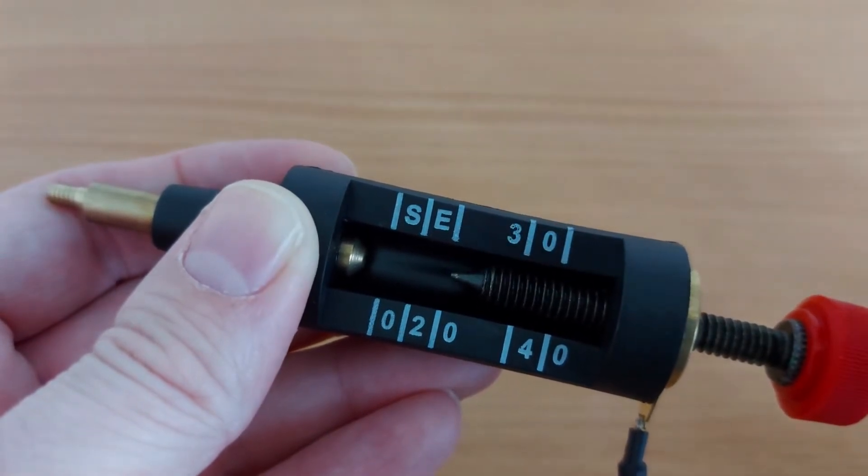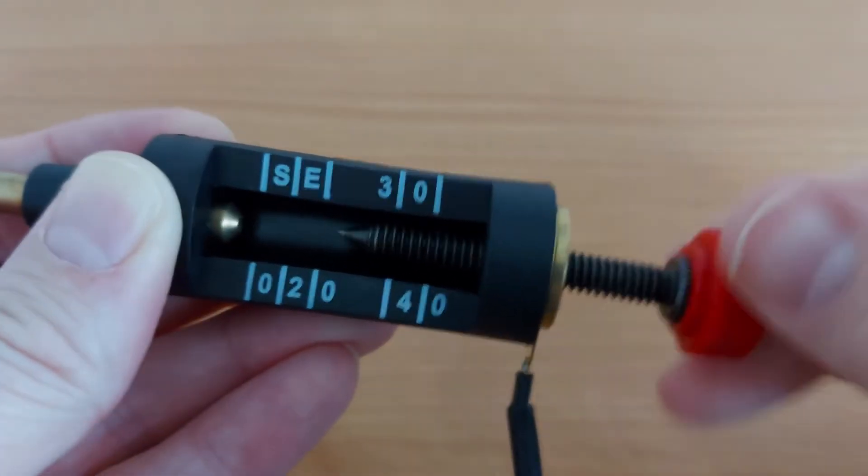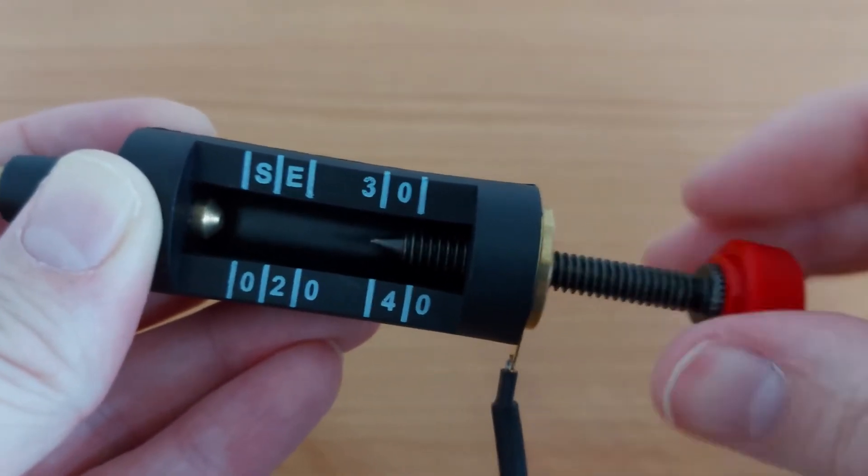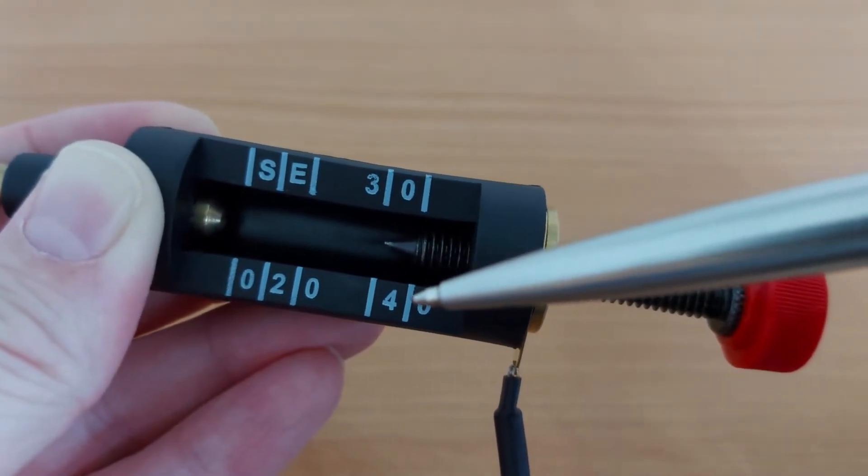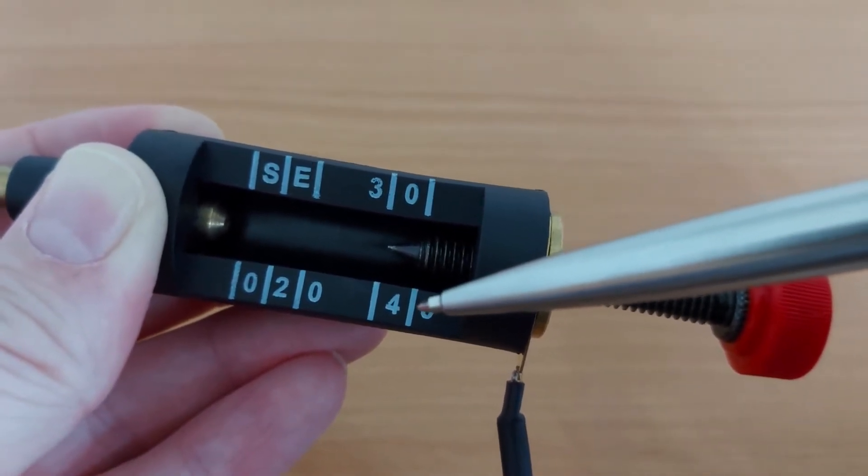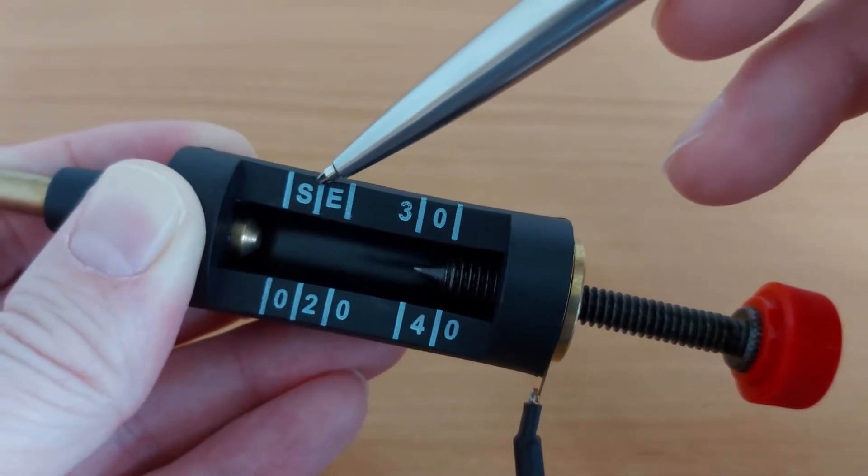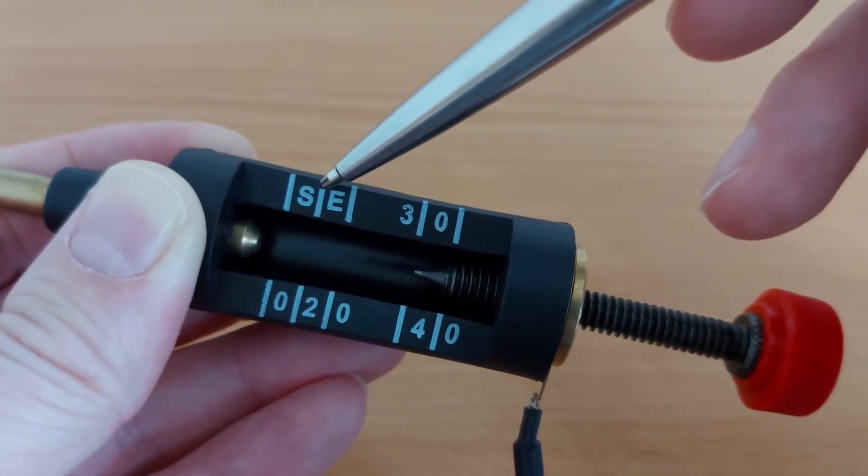We can equally measure up to 30,000 volts by twisting out the little red handle or indeed 40,000 volts if we go all the way to there. And just in case you're curious SE on this scale that stands for small engine so it's more relevant if you're testing a lawnmower or something like that.